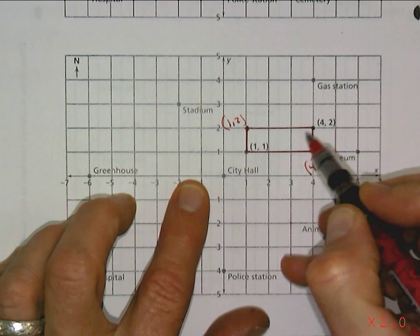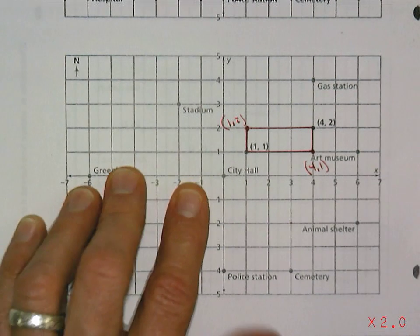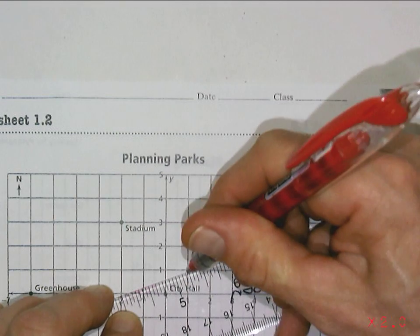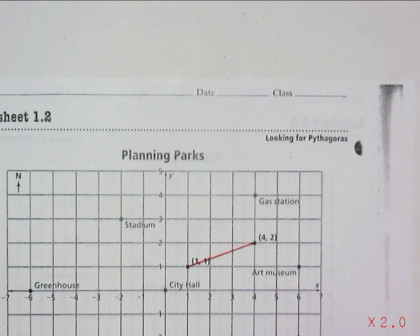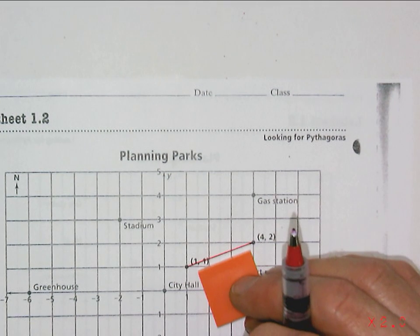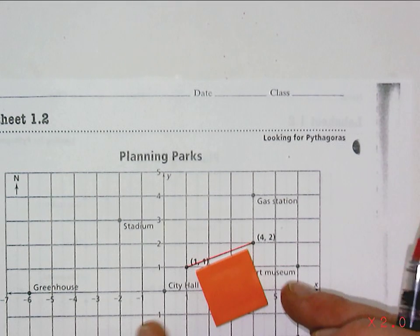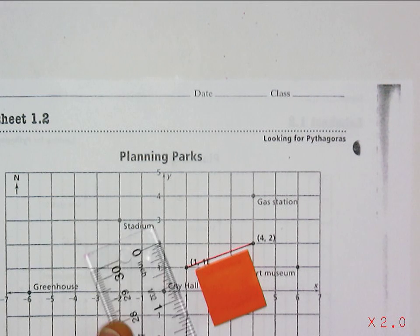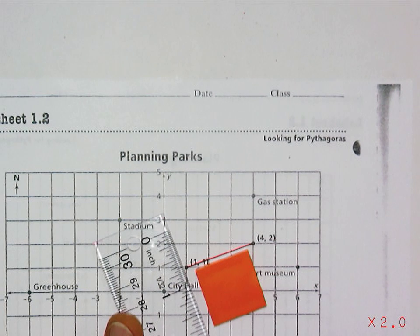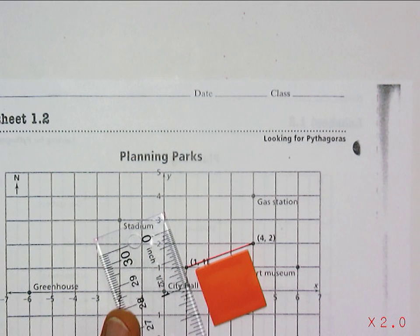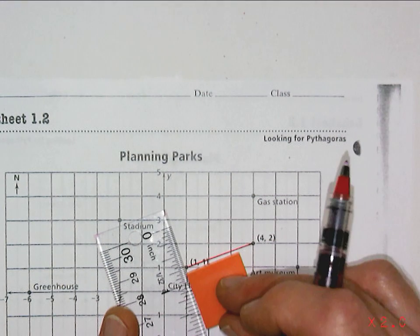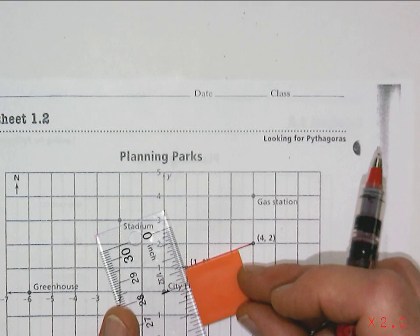Now, what if instead of using (1,1) and (4,2) as corners across from each other, I wanted to think of them as a side of the park? If I connect them like I did for the original square — really, a rectangle is just an elongated square — so if I think of this square and I wanted to extend it further in one direction, the idea is that if I could find a point somewhere down here that's in the right line with this, I might be able to make a rectangle.